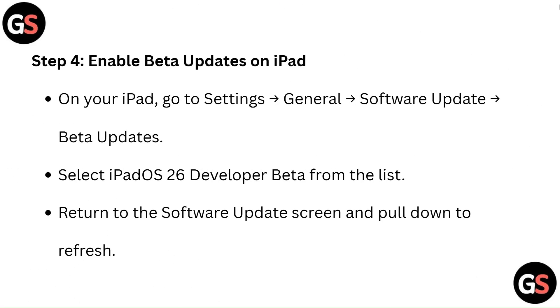Step 4: Enable Beta Updates on iPad. On your iPad, go to Settings, then General, then Software Update, then Beta Updates. Select iPadOS 26 Developer Beta from the list. Return to the Software Update screen and pull down to refresh.